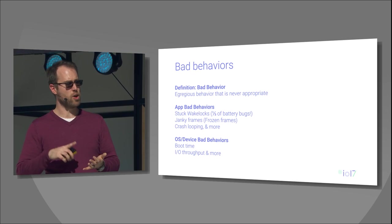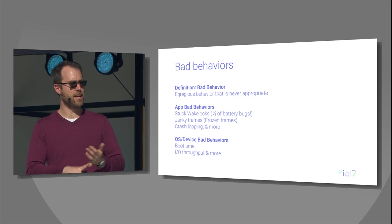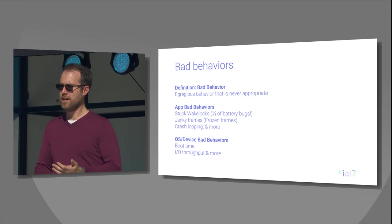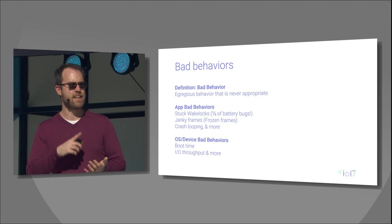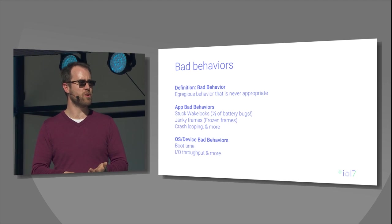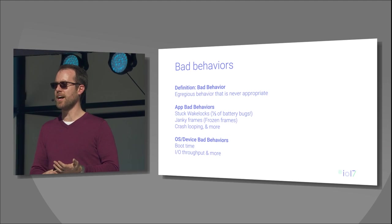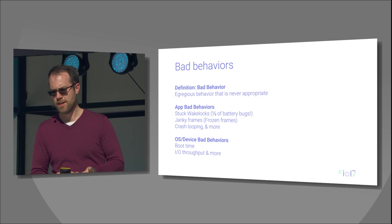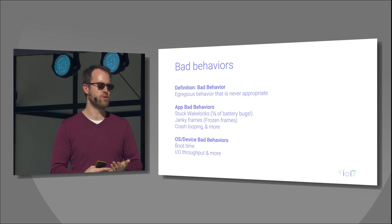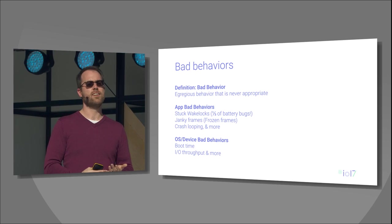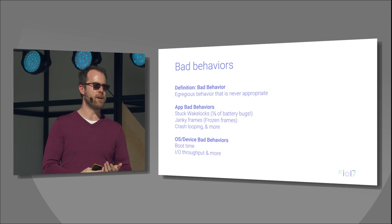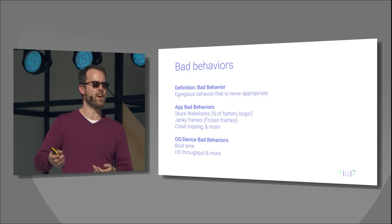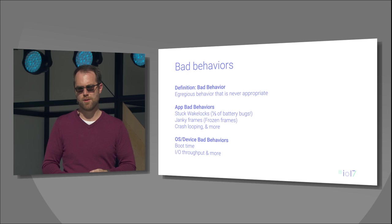We're also looking at the OS side — not everything is about apps. We have to bring a level of sanity and attribution to the operating system as well. One good example was the improvements we made in boot time, and we're also starting to look at I/O throughput, how many scans are happening in the background, and different parameters. All these things will start coming out and being available for you over the coming years.